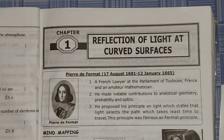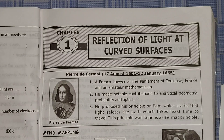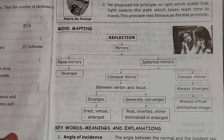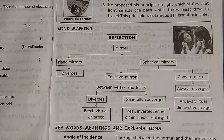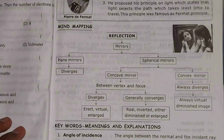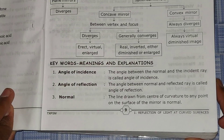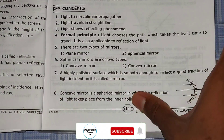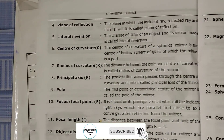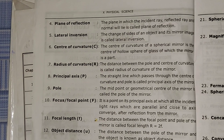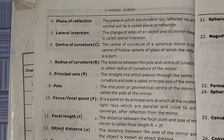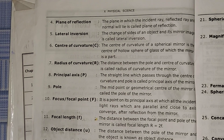Reflection of Light at Curved Surface — first we will see the mind map. After that we will see the keywords, meanings, and explanation. You can see the keywords, meanings, and explanation below. I'll turn the page to see how many words we have. In this page we have 20, and in the next page we have 6 more, making a total of 26 keywords.